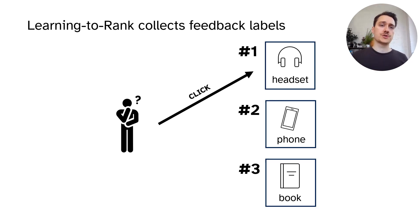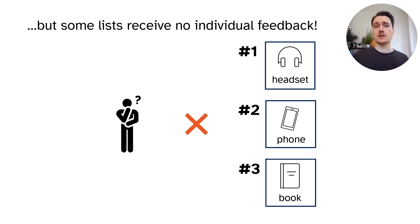In learning to rank, we show ranked lists to users and expect to receive feedback in the form of clicks. But what does it tell you if the user doesn't interact with any item?